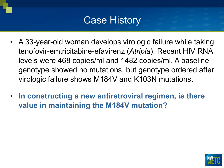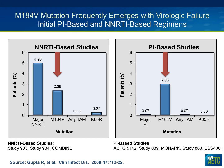Here's a case: a 33-year-old woman develops virologic failure on tenofovir, emtricitabine, and efavirenz (Atripla). Her viral load rises to 468 and then 1,482 copies per mL. A baseline genotype showed no mutations, but a new genotype now shows an M184V mutation and a K103N mutation. The question is: in constructing a new antiretroviral regimen, is there any value in maintaining the M184V mutation?